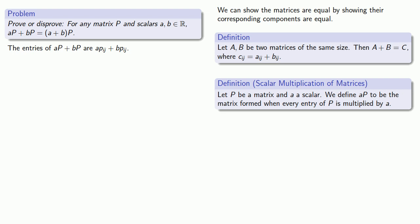Well, how about the entries of the matrix (a + b) times P? In this case, we have a scalar multiplication of the matrix P by the scalar a + b. And so we'll multiply every entry of P by a + b. And so that'll give us quantity (a + b) times p_ij as the entries.